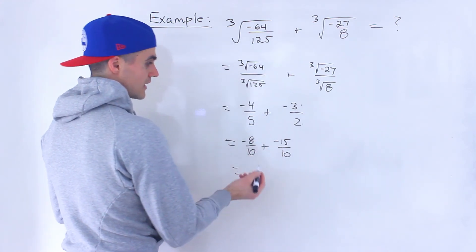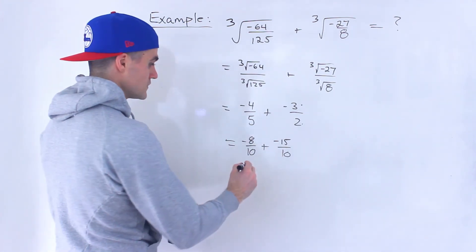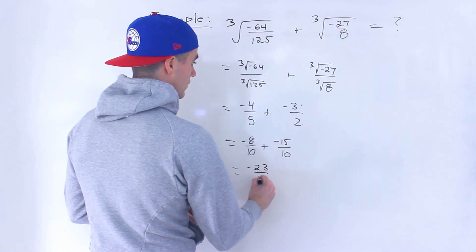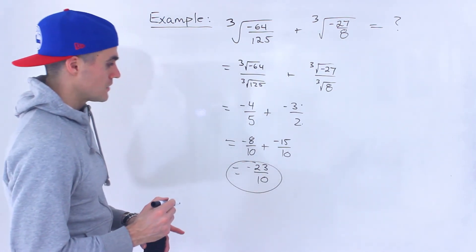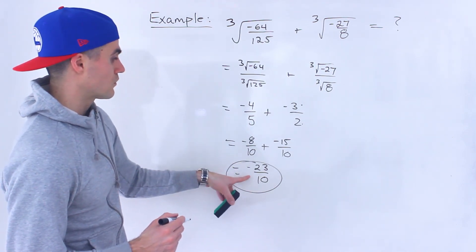Negative 8 plus negative 15 is the same as negative 8 minus 15, which is negative 23 over 10. So this ends up being the final answer. This doesn't simplify any further either.